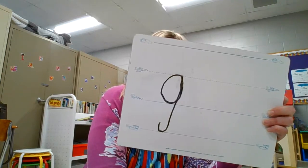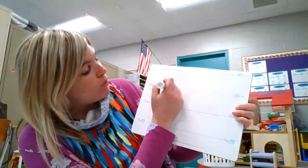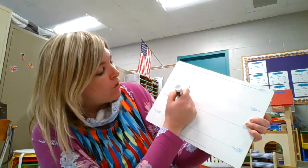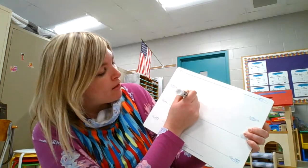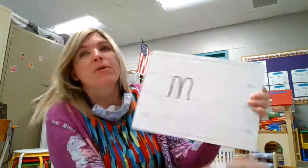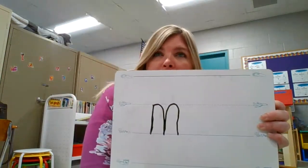Very good, erase! The next letter is M — man, mmm. What line does it start at? What line does it end at? It's going to start at the plain and end at the grass. For M, we start at the plain, pull down to the grass, go up up up to the plain and give it a hump, then go up up up back to the plain and give it another hump. M — man — mmm. Excellent, erase!